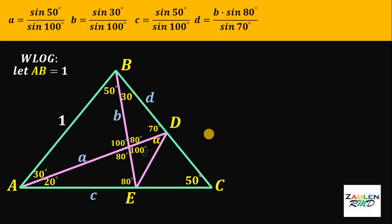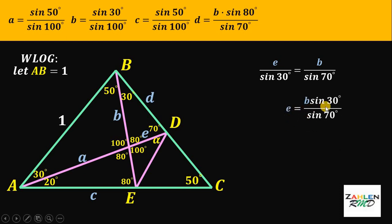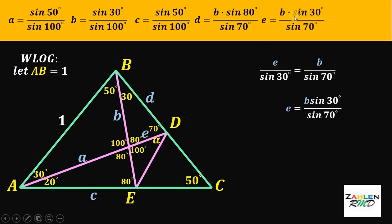Let this side length equal e. We will use sine law to solve for the exact value of side e. We get e over sine of 30 degrees, the opposite angle, equals side b over sine of 70 degrees. Solving for side e, we get e equals b multiplied by sine of 30 degrees over sine of 70 degrees.